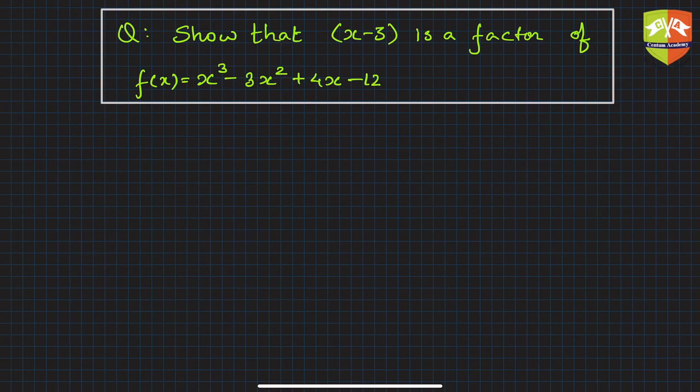Hello and welcome to another problem solving session on factor theorem. The question says show that (x - 3) is a factor of f(x) = x³ - 3x² + 4x - 12. It's a very easy question.